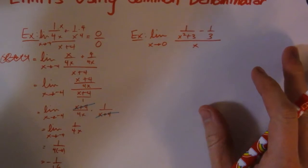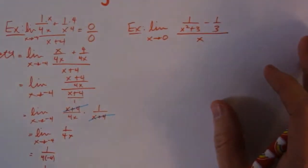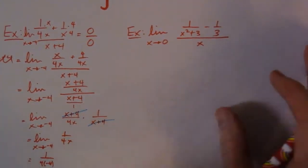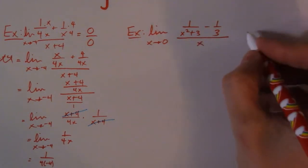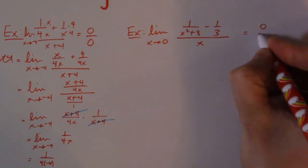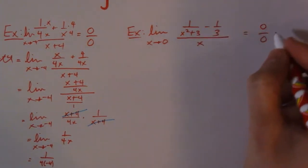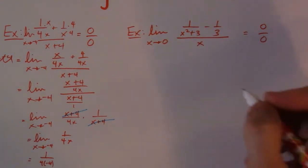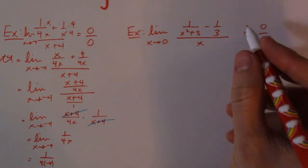So again, let me just zoom up a little bit here. So again, if I sub 0 in, I get 0 on top, 0 on the bottom. It's 1 over 3 minus 1 over 3 which is 0, and then x is 0. So I need to find a common denominator.